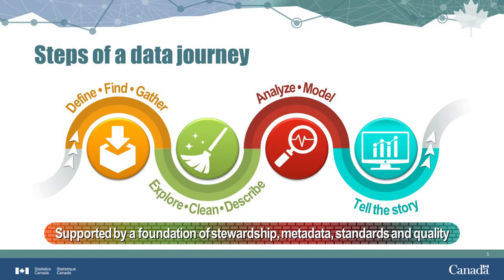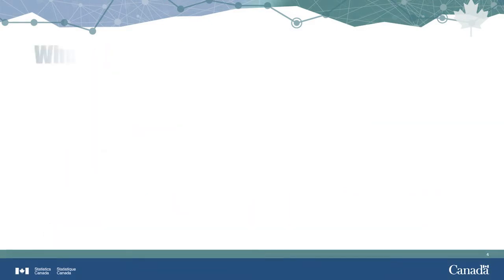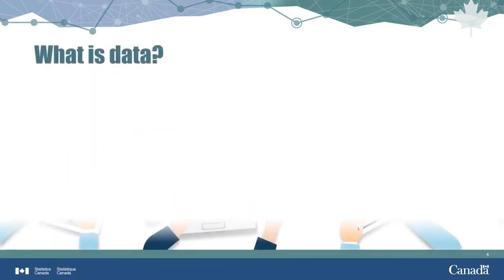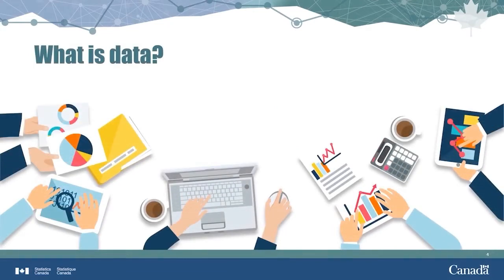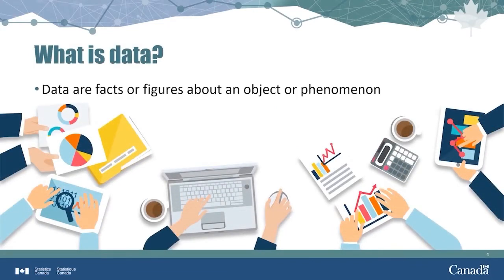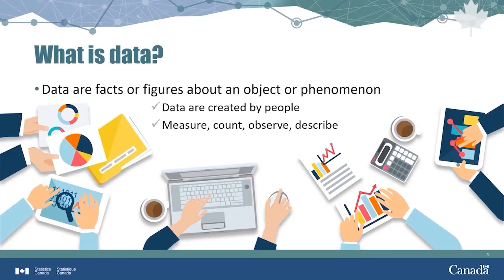First, let's consider what is data in the context of finding, gathering, and protecting it. Data are facts or figures about an object or phenomenon. Objects simply exist and phenomena happen. People create data — we measure, count, observe, and describe the world around us. We record what we find using symbols and images. This is what data is.